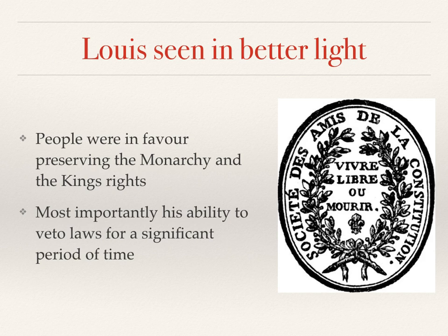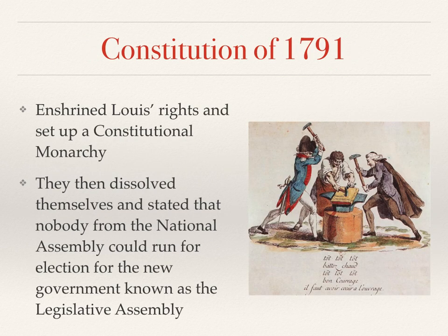People were more in favour of preserving not only the monarchy, but also some of the powers of the king. Most importantly, they were going to give the king the ability to veto any law he didn't approve for a significant period of time. It was in this atmosphere that the National Assembly finalised and ratified France's new constitution, known as the Constitution of 1791. With the National Assembly's job complete — which was the drawing of the Constitution — they disbanded and called for new elections.